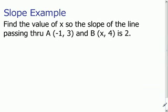So here, this slope example, find the value of x so the slope of the line passing through point A at (-1, 3) and B at (x, 4) is equal to 2. So let's first of all refresh our memory of what our formula for slope is.